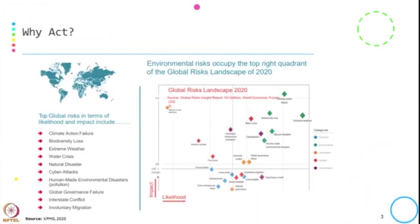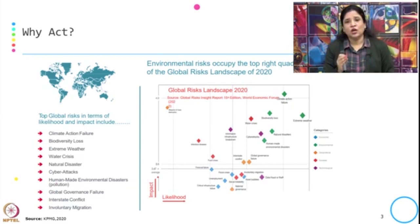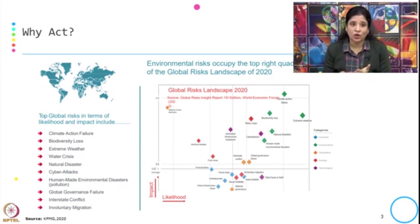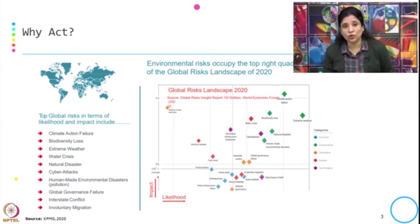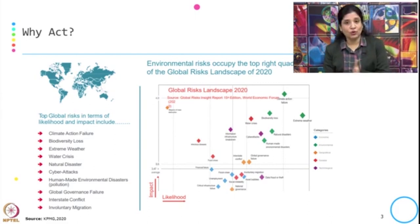Before getting into the financial products and services, let us look at a striking image provided by KPMG — striking because of the impact it is showing. It illustrates what different kinds of risks we are going to face or are already facing right now. The top global risks in terms of likelihood and impact include climate action failure, biodiversity loss, extreme weather, water crisis, natural disaster, cyber attacks, human-made environmental disaster, global governance failure, interstate conflict, and involuntary migration.